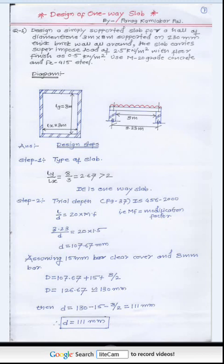Step 2: Trial depth. From page 37 of IS 456-2000, the relation is L/D = 20 × MF (modification factor), applicable for simply supported slabs. We know the length; we need to determine D. We are assuming the modification factor MF = 1.5. Using this, we get the value of effective depth d.